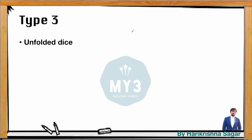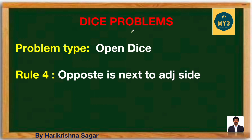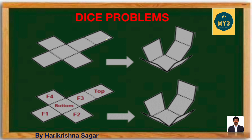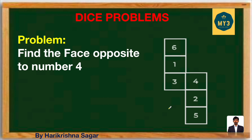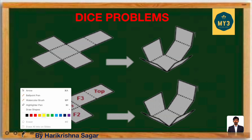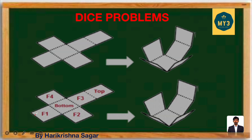Now let's move on to Type 3 questions — the unfolded dice. What you are going to see is an open die: there will be a paper that you have to fold into a dice, and after folding you have to find out what is the opposite face. The question will be like: what is opposite to four, or opposite to three? You need to observe one simple pattern: when you are folding, these two faces act as opposite, and in folding, next to adjacent acts as opposite.